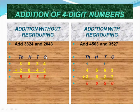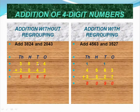We have to start from the ones place. In the ones place, 4 and 3 are there. 4 plus 3 equals 7. In the tens place, 2 and 4 are there — 2 plus 4 equals 6. In the hundreds place, 8 and 0 are there — 8 plus 0 equals 8. In the thousands place, 3 and 2 are there — 3 plus 2 equals 5. So the answer equals 5,867.